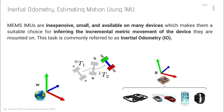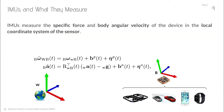Inertial odometry is a task of inferring the incremental metric movement of the device with respect to its previous pose, based on the information provided by its on-board IMU sensors. IMU sensors are inexpensive and power-efficient and can be readily available on various devices and robotic platforms, such as drones, autonomous vehicles, and smartphones and watches. In particular, IMUs measure the instantaneous 3D angular velocity and specific forces applied to the device in its own coordinate system.